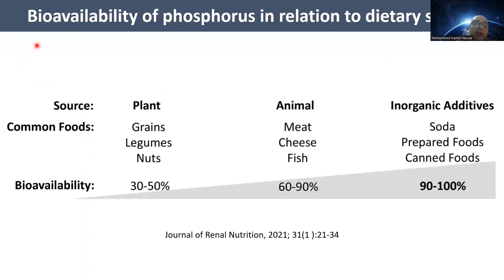You should consider the bioavailability of phosphorus in the diet — meaning the percent of phosphate absorbed from the intestine. Plant-based phosphorus, like grains, legumes, and nuts, has moderate bioavailability, while animal foods like meat, cheese, and fish have higher bioavailability. You should try to use plant-based protein and completely avoid inorganic additives like soda, prepared foods, and canned foods, which have approximately 100% bioavailability.